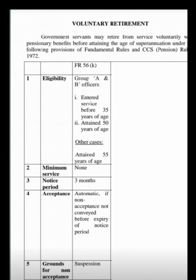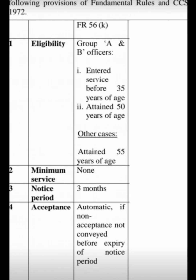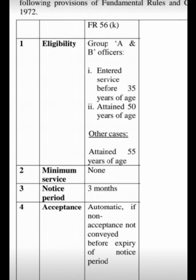F.R. 56K — Eligibility: Group A and B officers who entered service before 35 years of age and have attained 50 years of age. In other cases, those who have attained 55 years of age. Minimum service required: None. Notice period: 3 months. Acceptance: Automatic if non-acceptance is not conveyed before expiry of notice period.